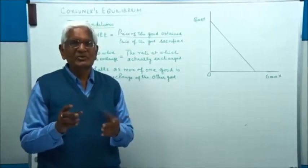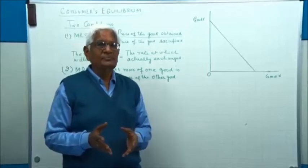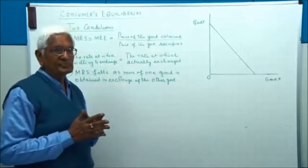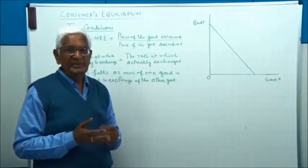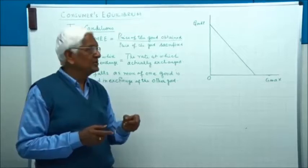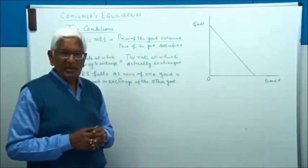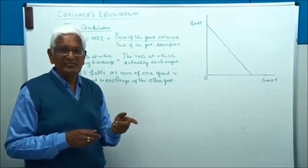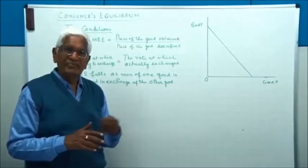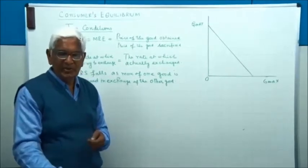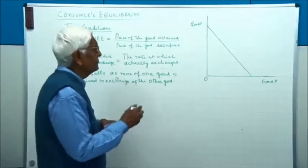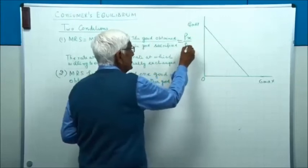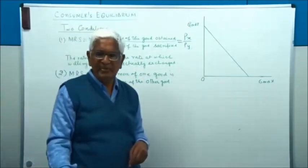If you represent Y on the X axis and X on the Y axis, it will be Py upon Px. So X and Y are not important; what is important is the price of the good obtained. Take this price divided by price of the good sacrificed. In our example, we are going to take X on the X axis, which consumer is going to obtain, and Y on the Y axis, which consumer is going to give up.